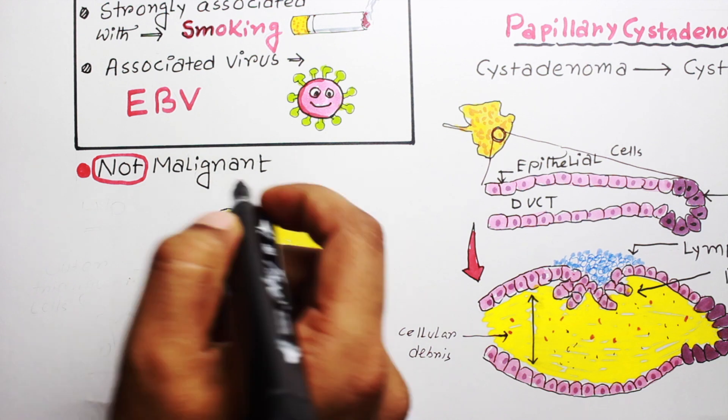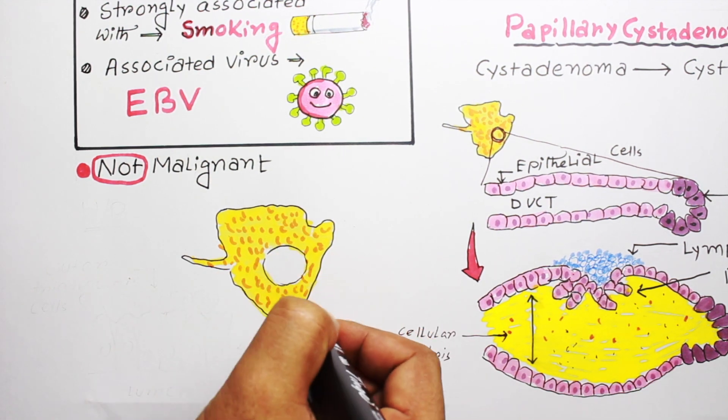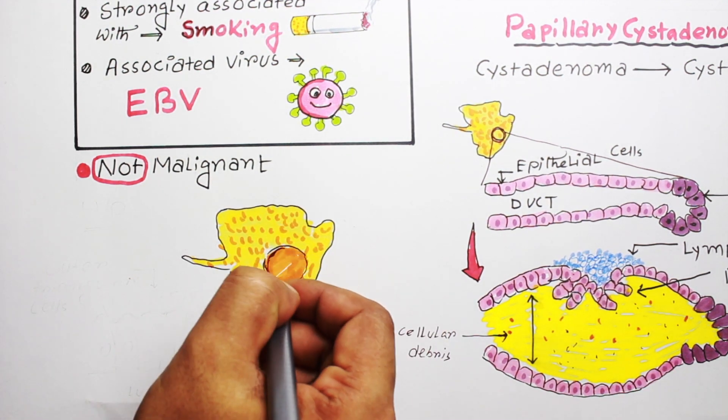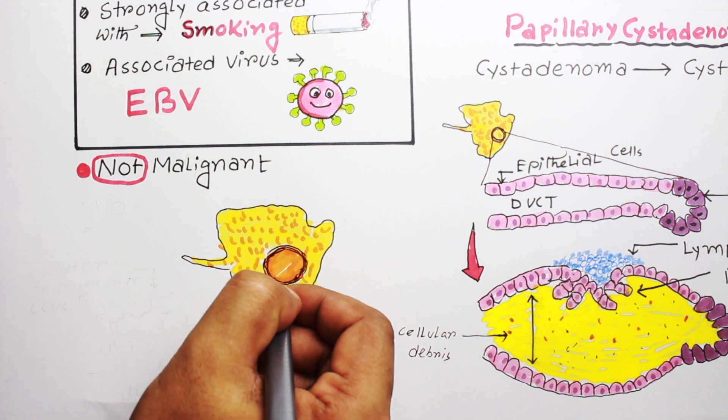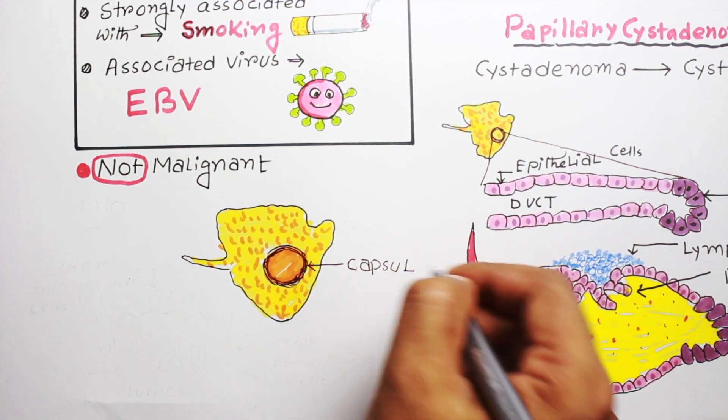Another important point about this tumor is that it is not malignant, because it doesn't break through the basement membrane. Most of the time it is encapsulated by connective tissue when present in the parotid gland.